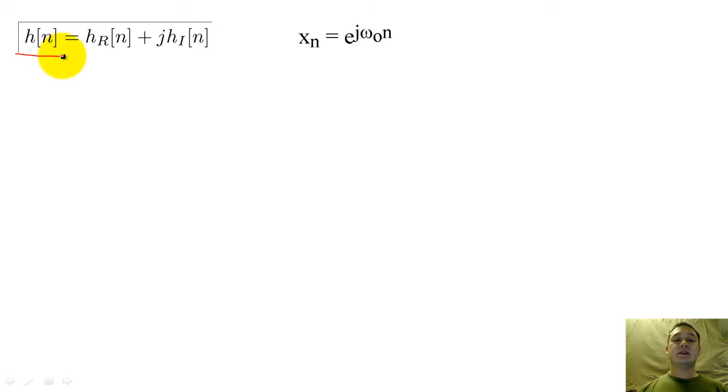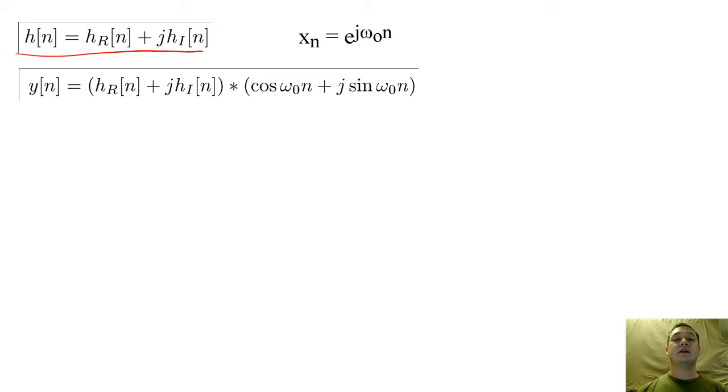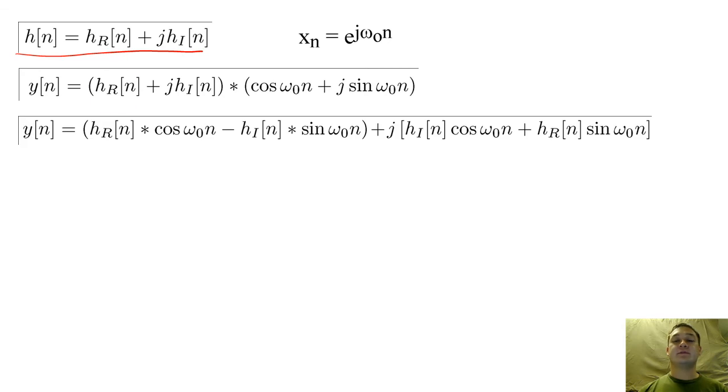If we have a complex-valued impulse response and a complex-valued input, we can still find y of n using convolution. Since convolution distributes like multiplication, we can reorganize our convolution to look something like this.